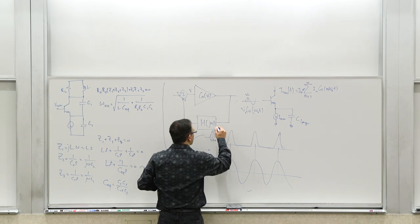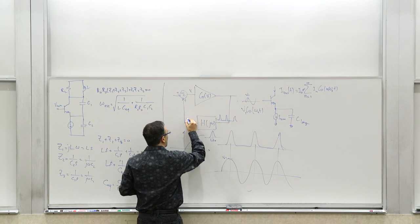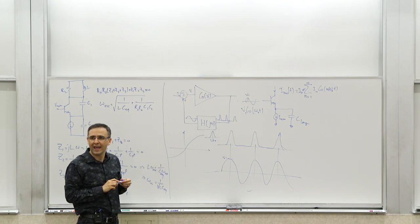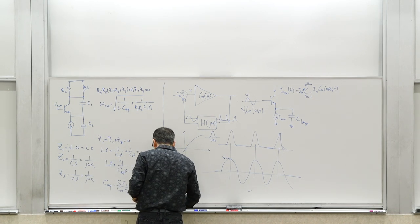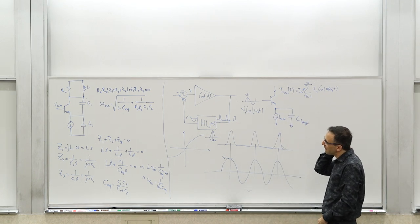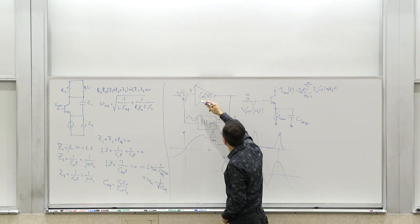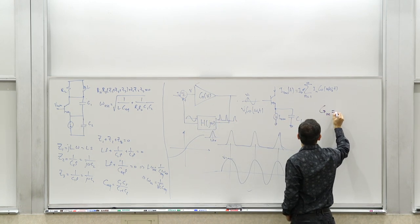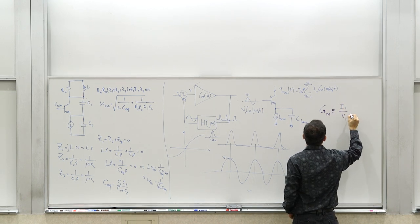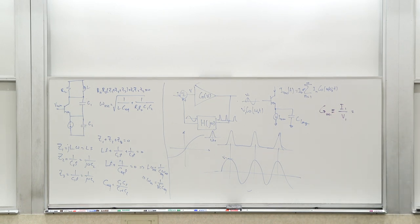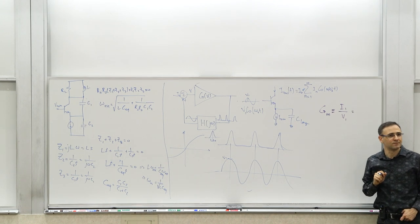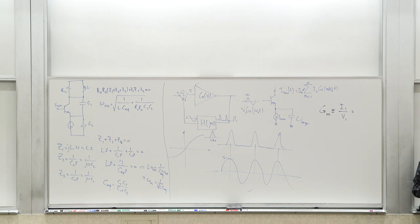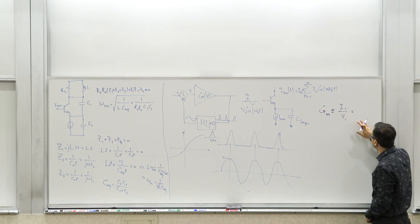Although the waveform at the nonlinearity output is highly non-sinusoidal, what comes out through the resonant filter is more or less sinusoidal. The fundamental component of the describing function tells you how much signal you get. We define a large signal transconductance: capital G_M = I₁/V₁, the ratio of the fundamental output current to the input drive amplitude. This is the describing function.